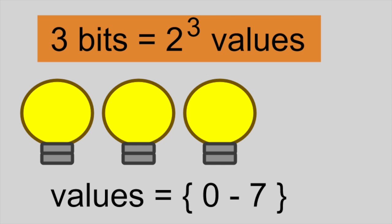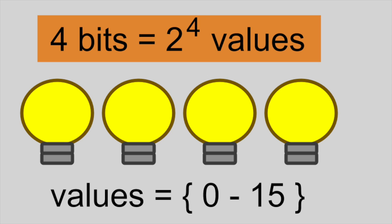With 3 bits, we can represent 8 different values, 0 through 7. And with 4 bits, we can represent 16 different values, 0 through 15.